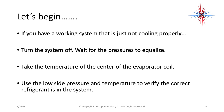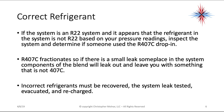This first check is extremely important, especially with newer refrigerants. Turn the system off and wait for the pressures to equalize — so you have your gauges on the system and your pressures are going to equalize. Take the temperature of the center of the evaporator coil. Use the low side pressure and temperature to verify that the correct refrigerant is in the system. This gets extremely important when talking about blends. If the system is an R22 system and the refrigerant appears not to be R22 based on your pressure readings, inspect the system and determine if someone used the R407C drop-in. R407C fractionates, so if there's a small leak, the components of the blend will leak out at different rates and leave you with something that is not R407C.